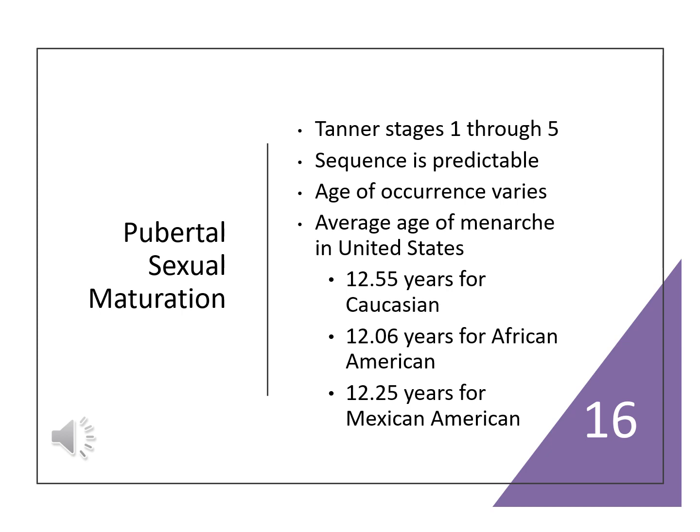Puberty occurs during adolescence, and the Tanner stages are what is used to identify what stage of pubertal maturation the child is in. It is very sequential. The age it starts and how long it takes varies significantly from child to child. In girls, the initial indication of puberty is the appearance of breast buds, whereas for males the first indication is testicular enlargement. The average age varies by ethnicity but they're all around age 12.